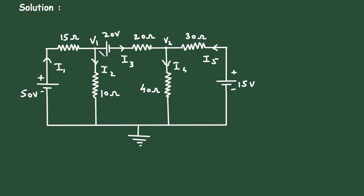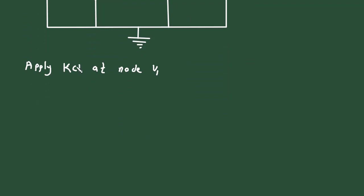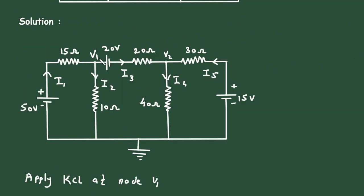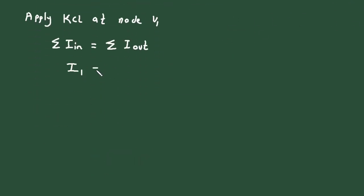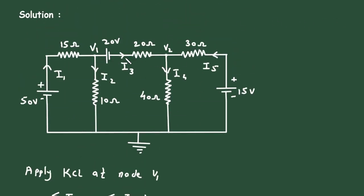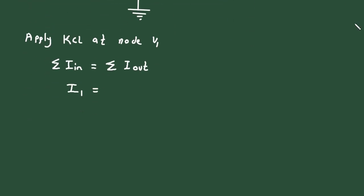The first step is to apply KCL at node V1. KCL stands for Kirchhoff's current law. According to KCL, the summation of all the currents entering a node is equal to the summation of all the currents leaving the node. At node V1, the entering current is I1, and it is equal to the leaving currents I2 plus I3.